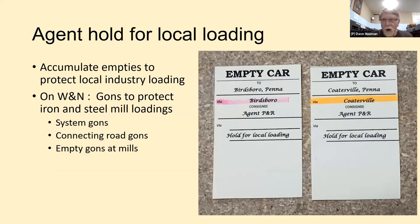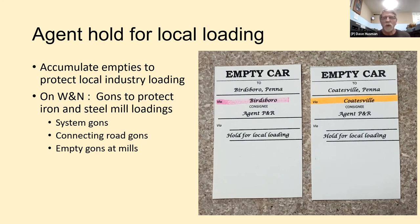Dave has a specific empty car move called an agent hold. Because he has a lot of iron and steel industry, he needs many empty gondolas. He uses agent hold waybills to drive empty gons to yards near steel mills and foundries to hold them for future billing — system gons, connecting road gons like B&O and Pennsy cars, or any gon that becomes empty at a mill itself. These accumulate cars for loading.